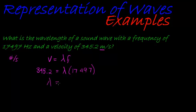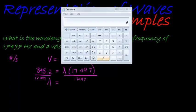And now we simplify using again that very critical math skills. So 17497, divide that on both sides, and then what answer do we get? We have 345.2 divided by 17497.